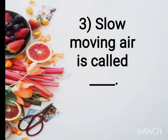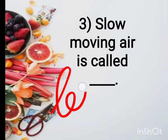Slow moving air is called dash. Slow moving — there is air that moves very fast, like when a storm comes the wind blows very fast. But the air that moves very slowly, what do we call that air?